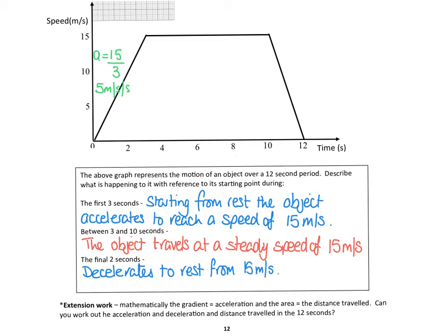And deceleration, so the decel we'll call it, would equal our change from our 15 up here to our 0 down here in a time of only 2 seconds. So it would be 15 divided by 2, which equals 7.5 meters per second per second of deceleration.